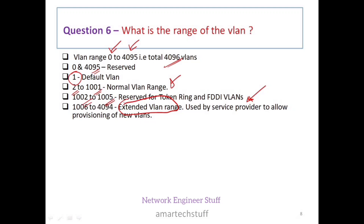This can also be asked as a separate interview question: what is the range of extended VLAN? The extended VLAN range starts from 1006 to 4094. These extended VLANs are particularly used by service providers to allow provisioning of new VLANs.